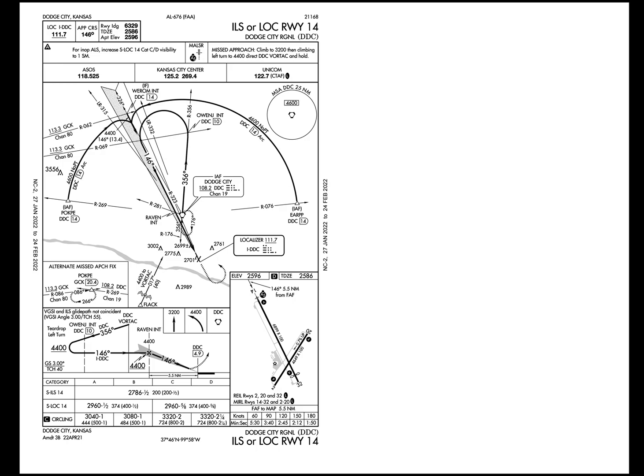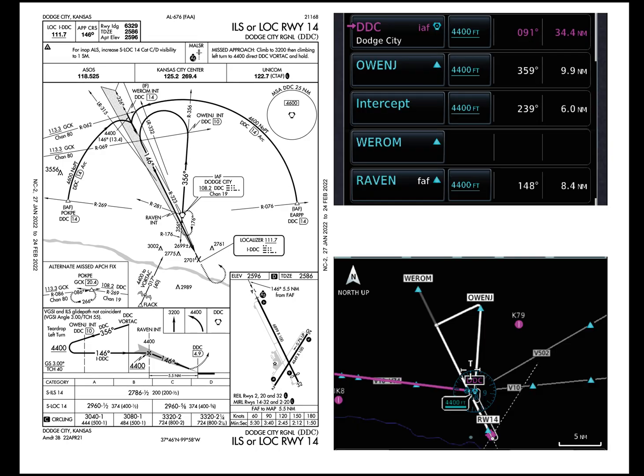At Dodge City, you're supposed to go out to ONJ, take a left turn, and then intercept the final. When you look at this in an FMS, they tell you ONJ, intercept something, then go to a point and then commit — that's a little confusing. It's also a 90-degree intercept. So how you work that out in practice, the FMS doesn't necessarily help you here.